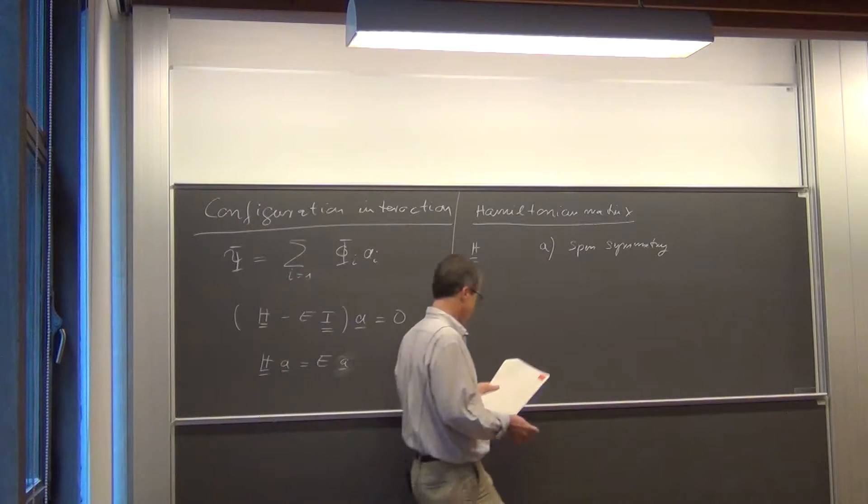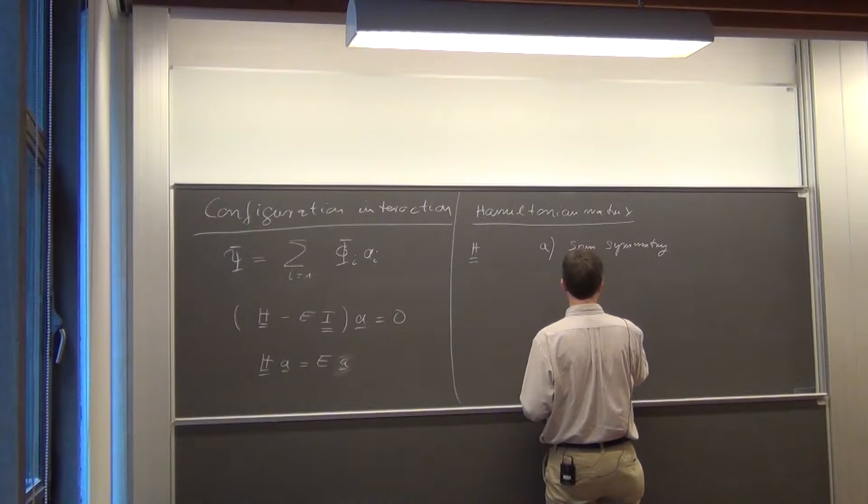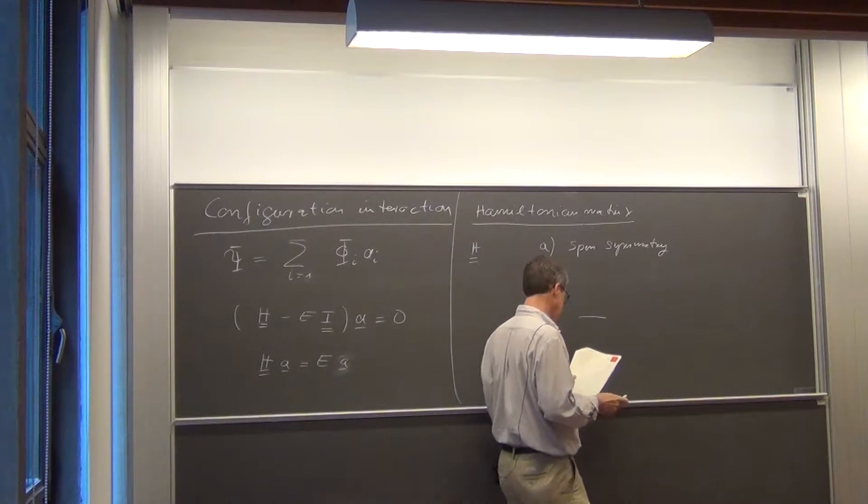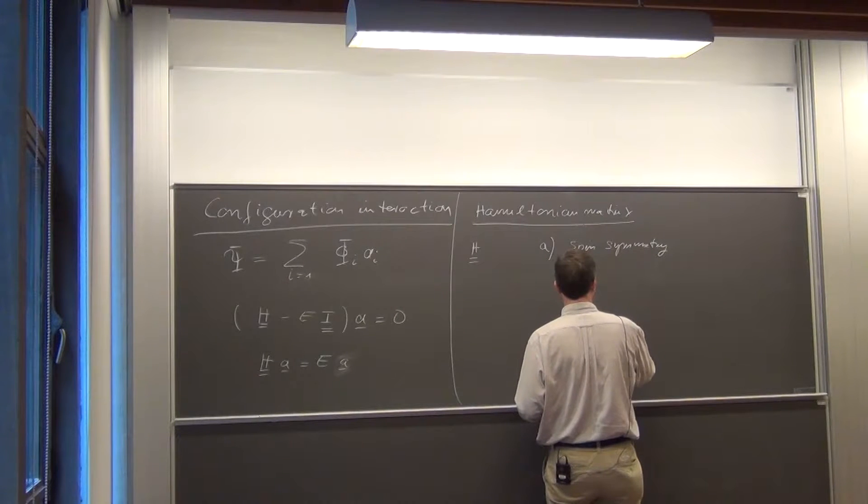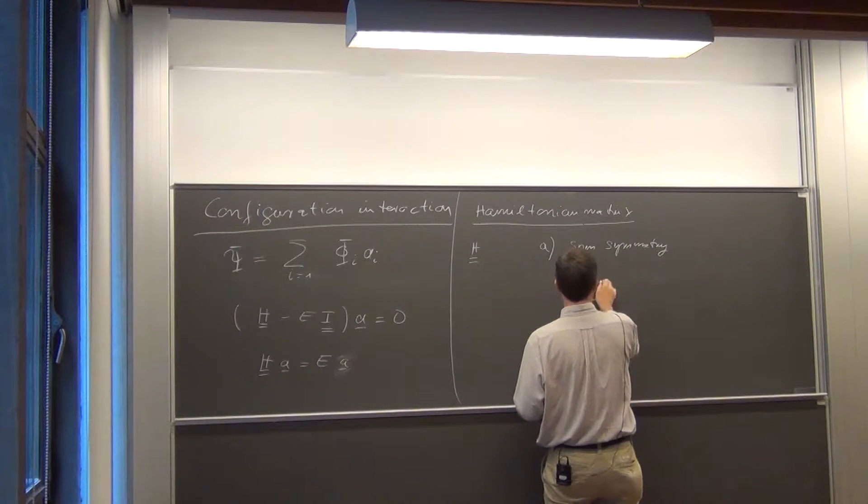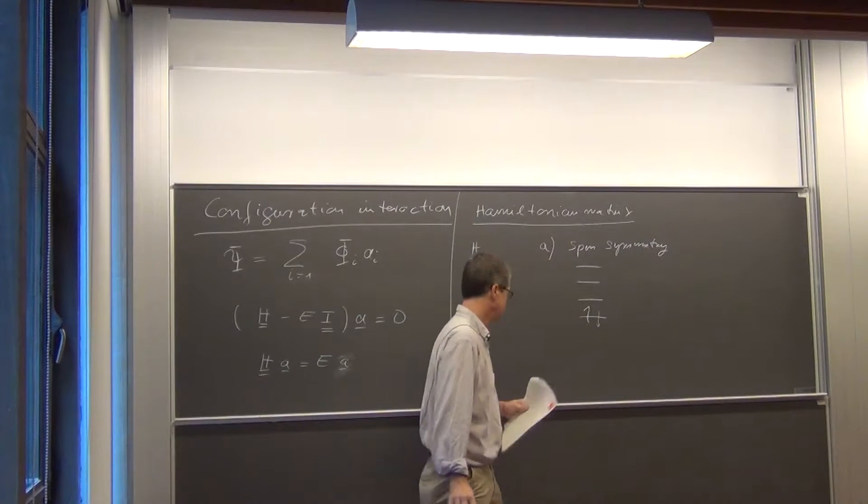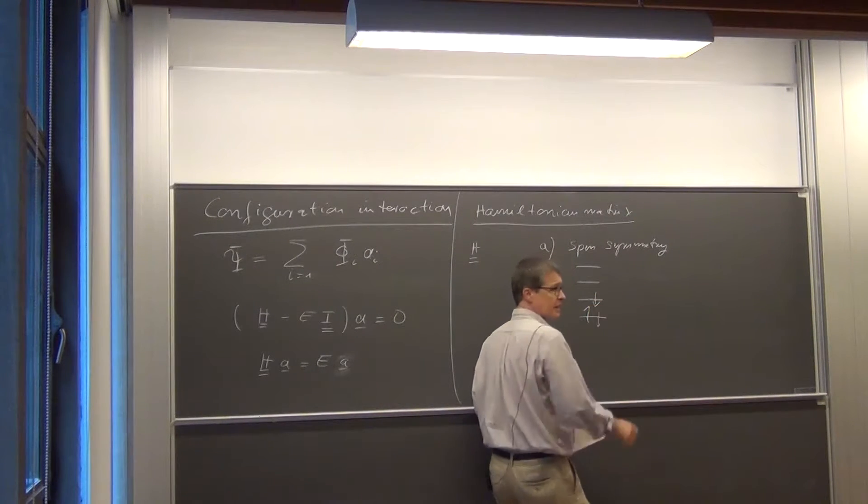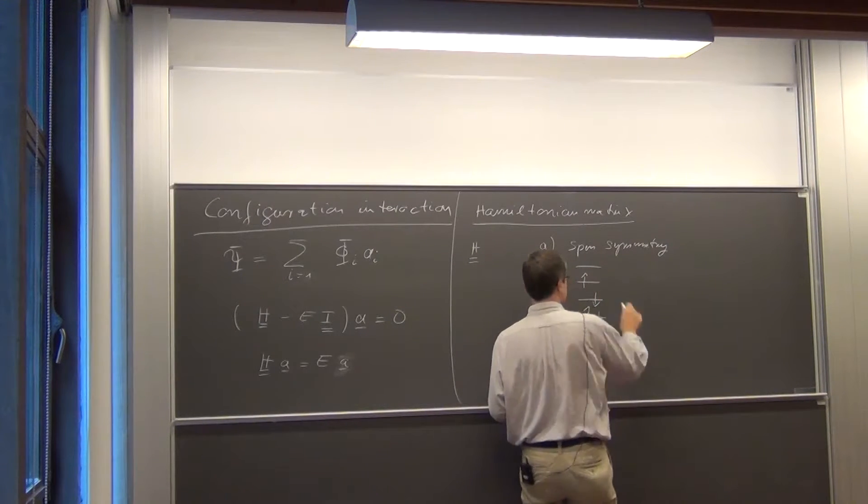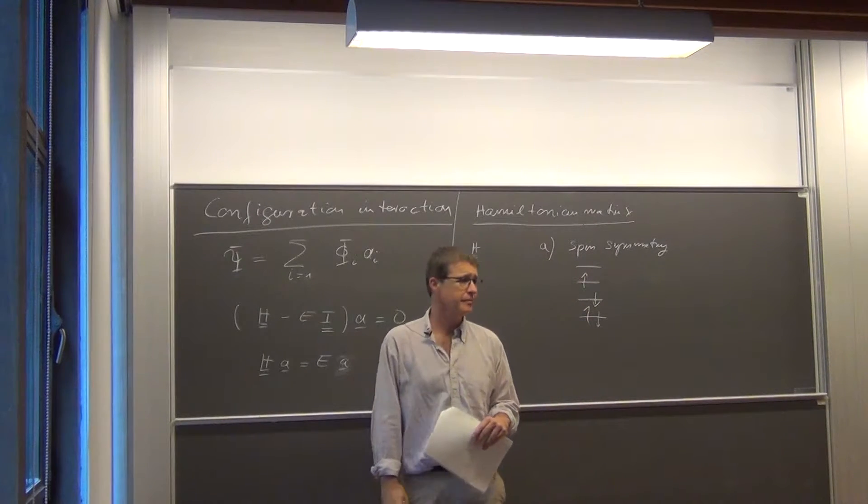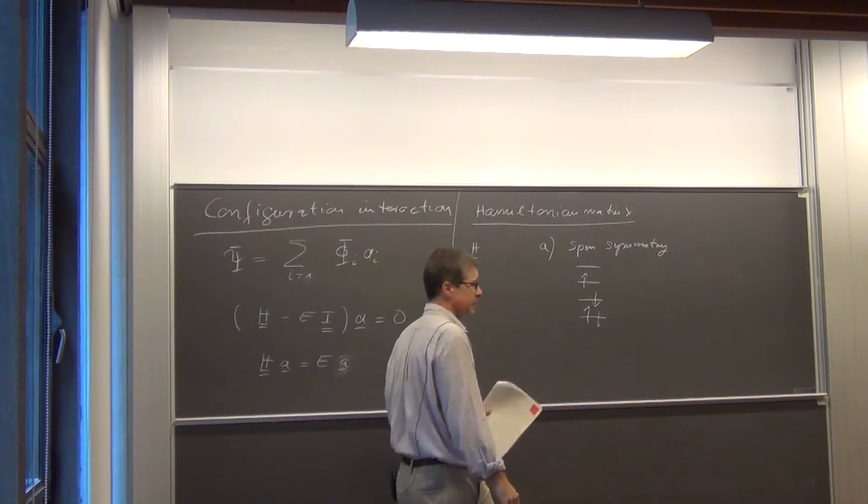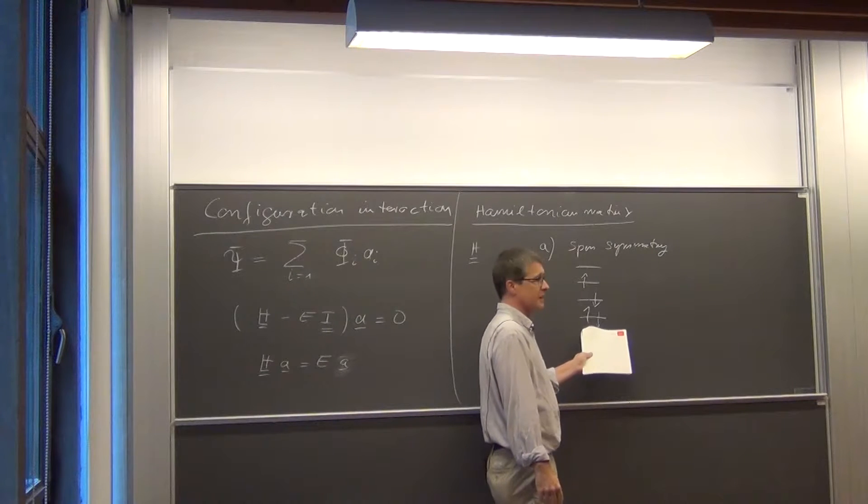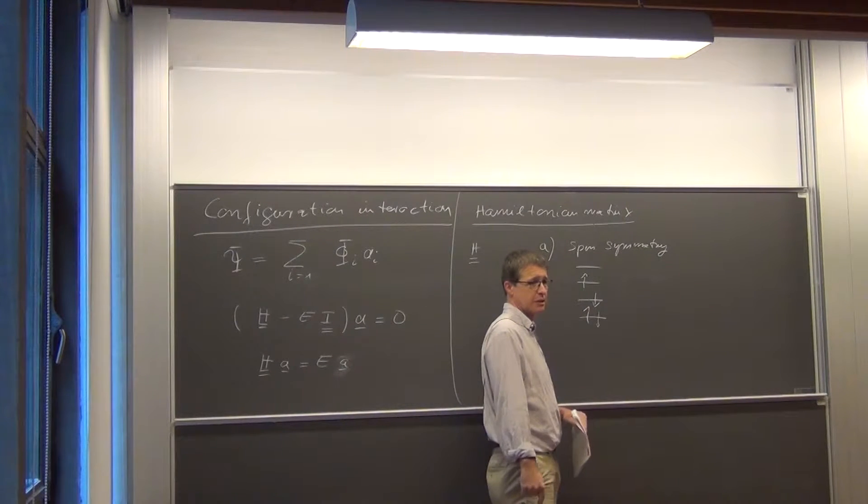If we look at a single excited determinant, and let's assume that we have a few orbitals, four for example. And I moved the electron sitting in this occupied orbital to some other orbital like this. This would be a single excited determinant.